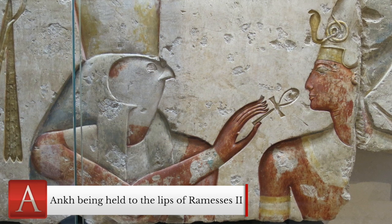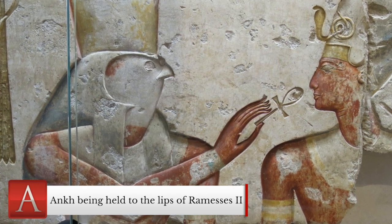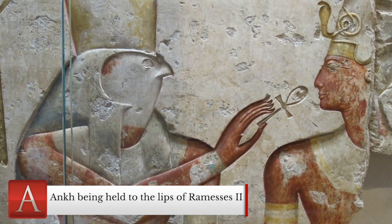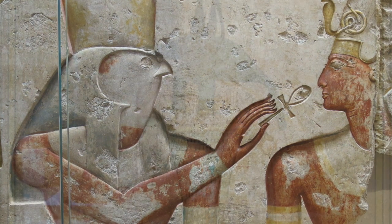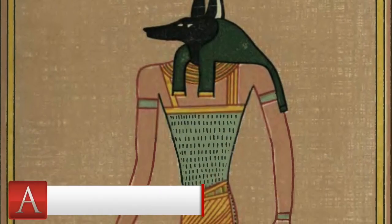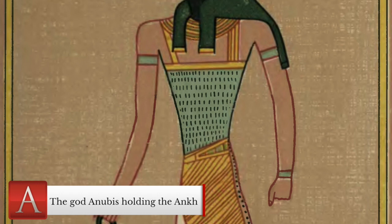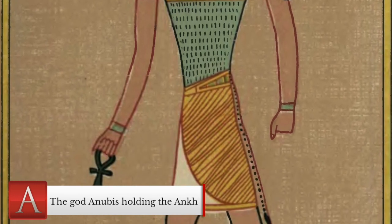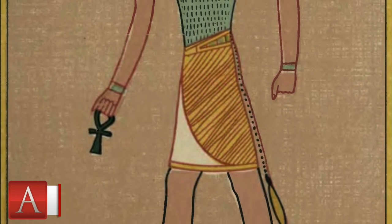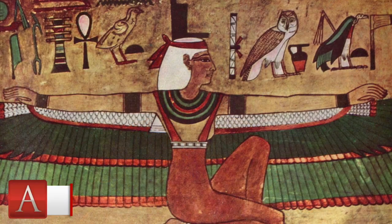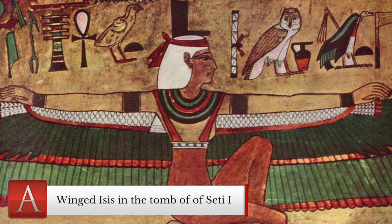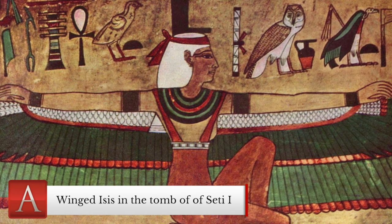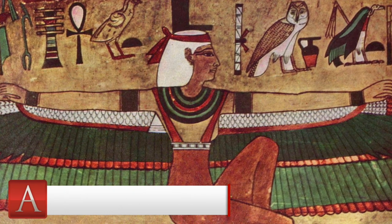It isn't surprising then that the Ankh is prominently found in tomb paintings and inscriptions, and often deities such as Anubis and Isis are depicted holding the Ankh to the mouth of a soul to revitalize it in the afterlife. Although the Ankh is depicted being held by many deities including Osiris and Anubis, Isis is the most common. Her cult is known to have promised afterlife through resurrection, and the Ankh became instantly recognizable as the symbol for eternal life.